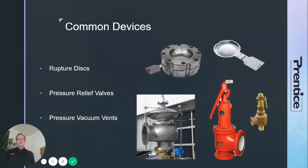Today, there are three major categories of devices used to protect vessels: rupture discs, relief valves, and pressure vacuum vents.